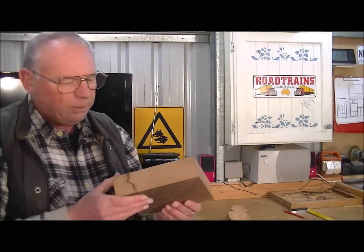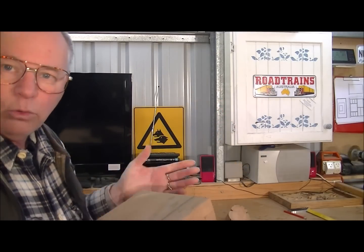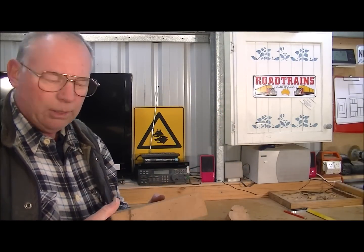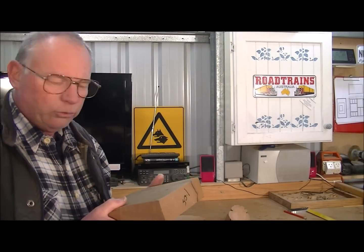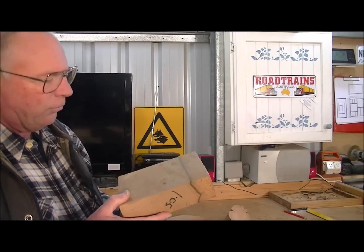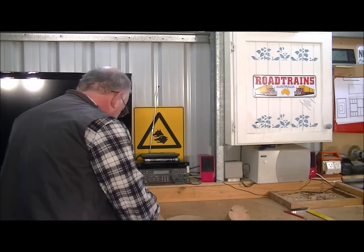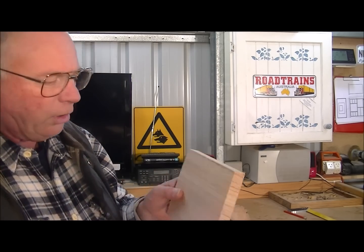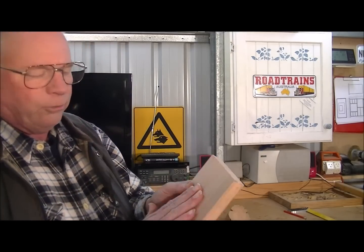Now this is Tasmanian blackwood. Incidentally all the woods that I'm using today is all Tasmanian grown and some of the woods are quite exotic. This is Tasmanian blackwood. This is a piece of Tasmanian oak which is actually just an offcut of a piece of furniture grade planking that I have.